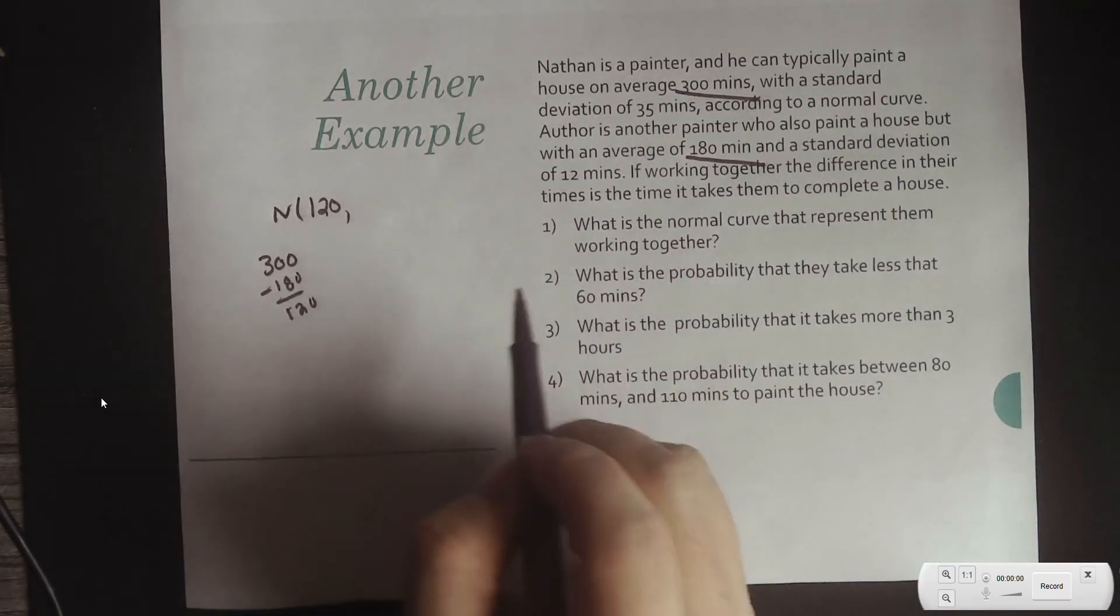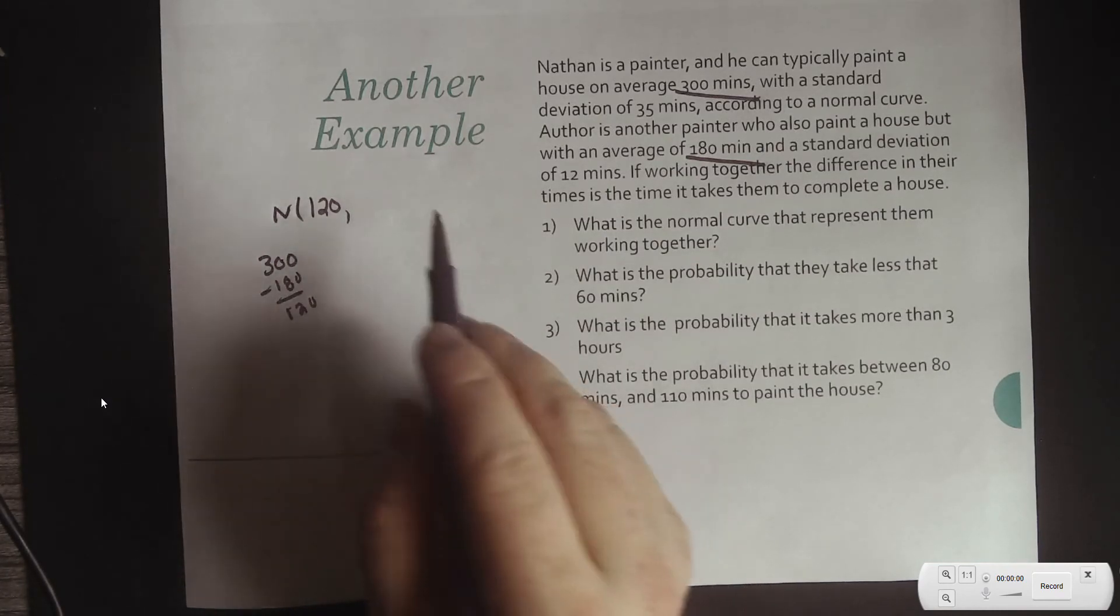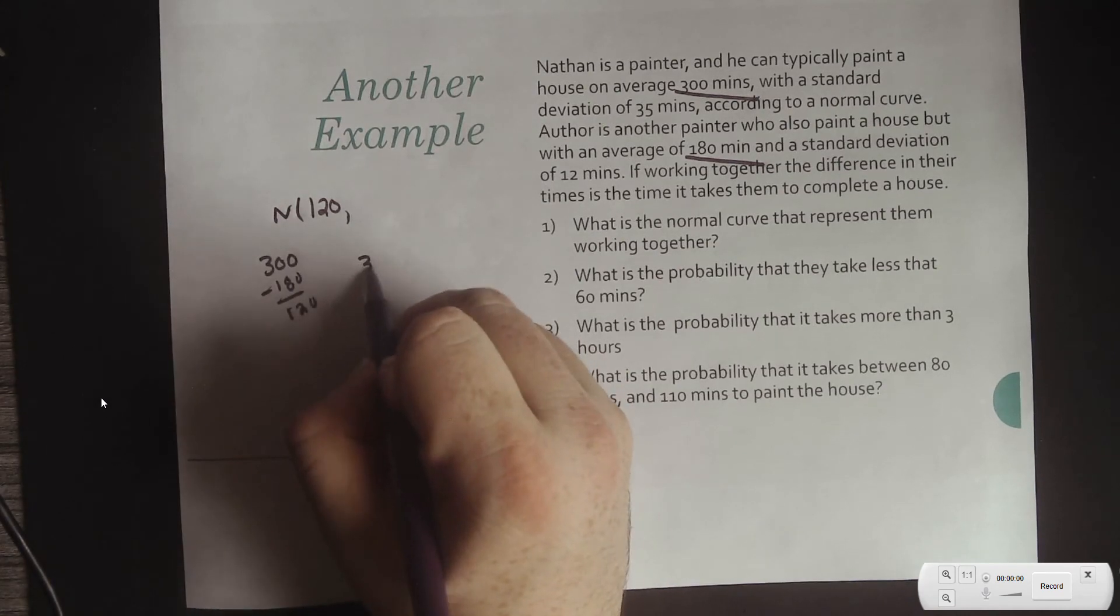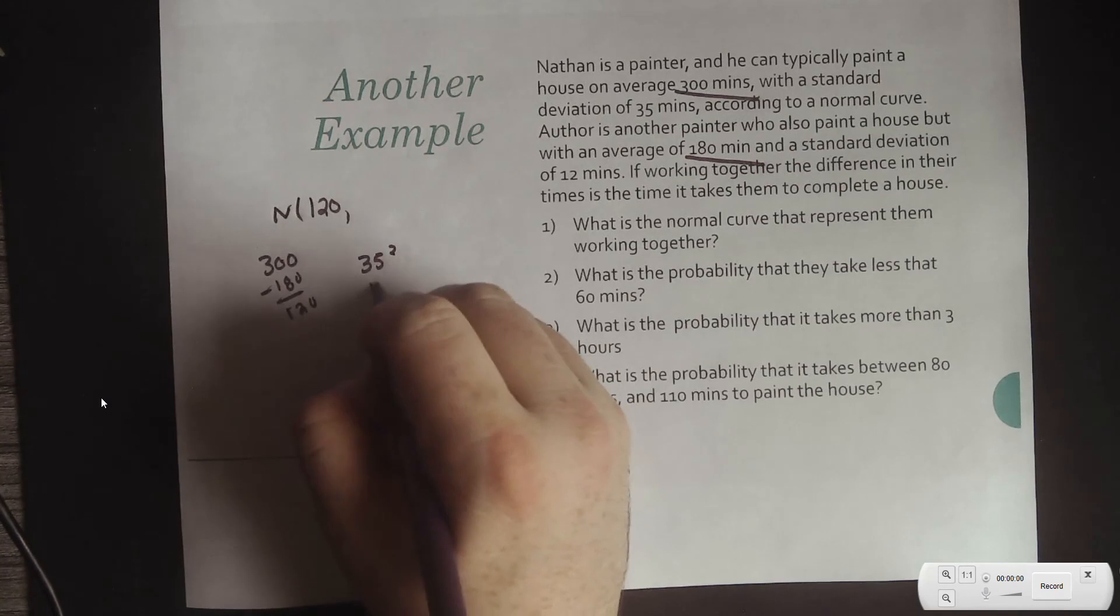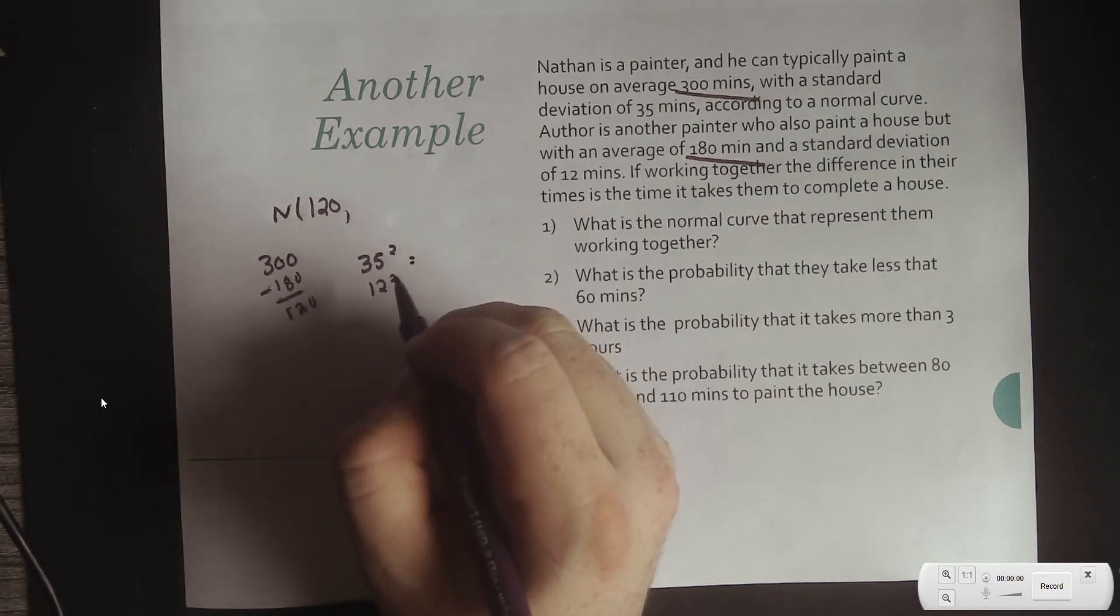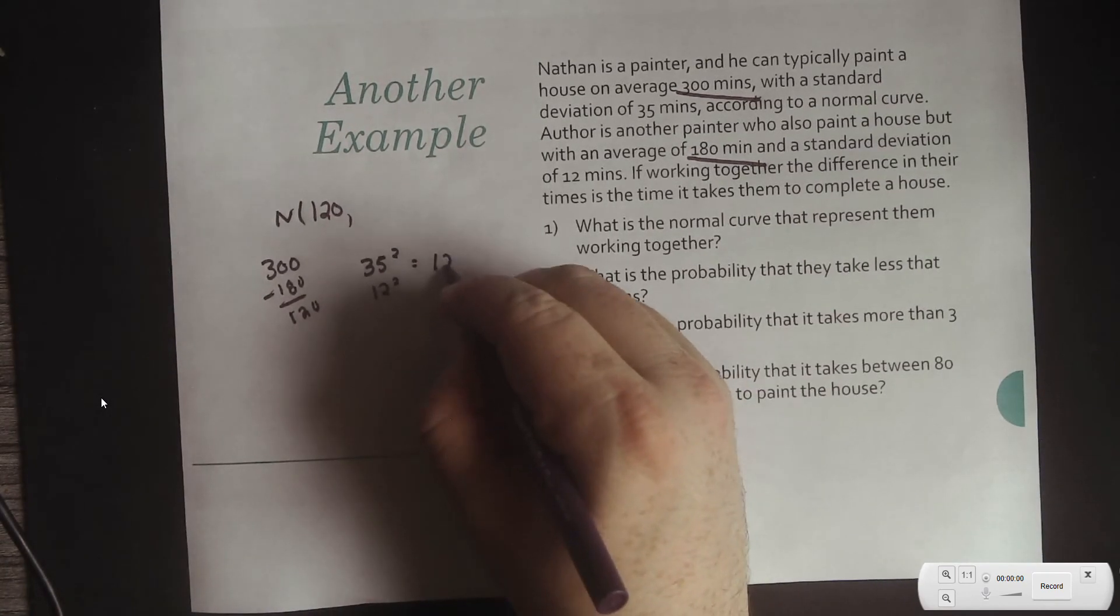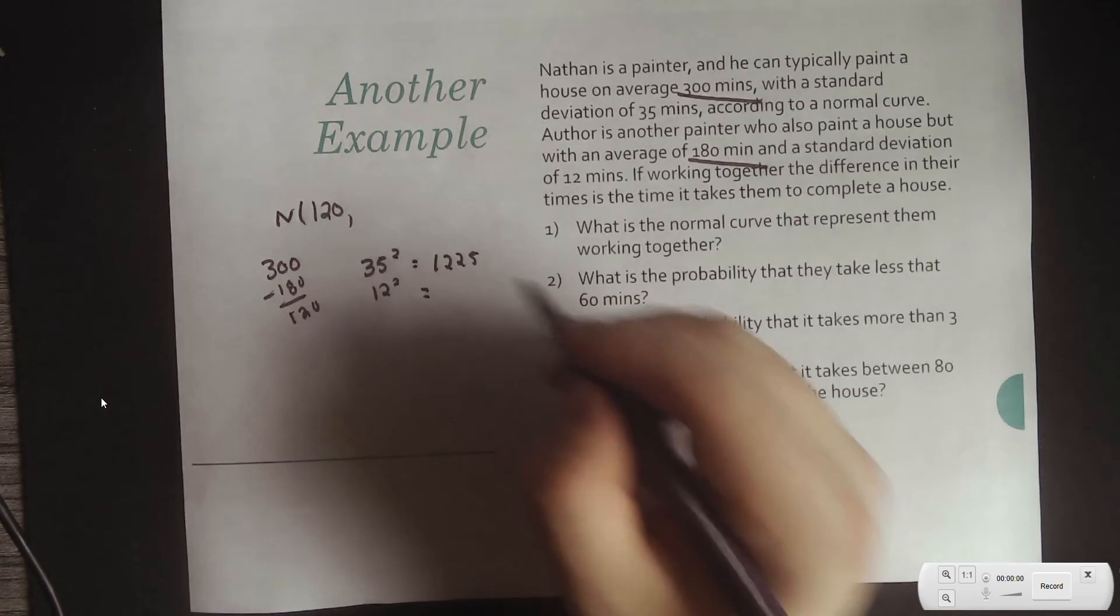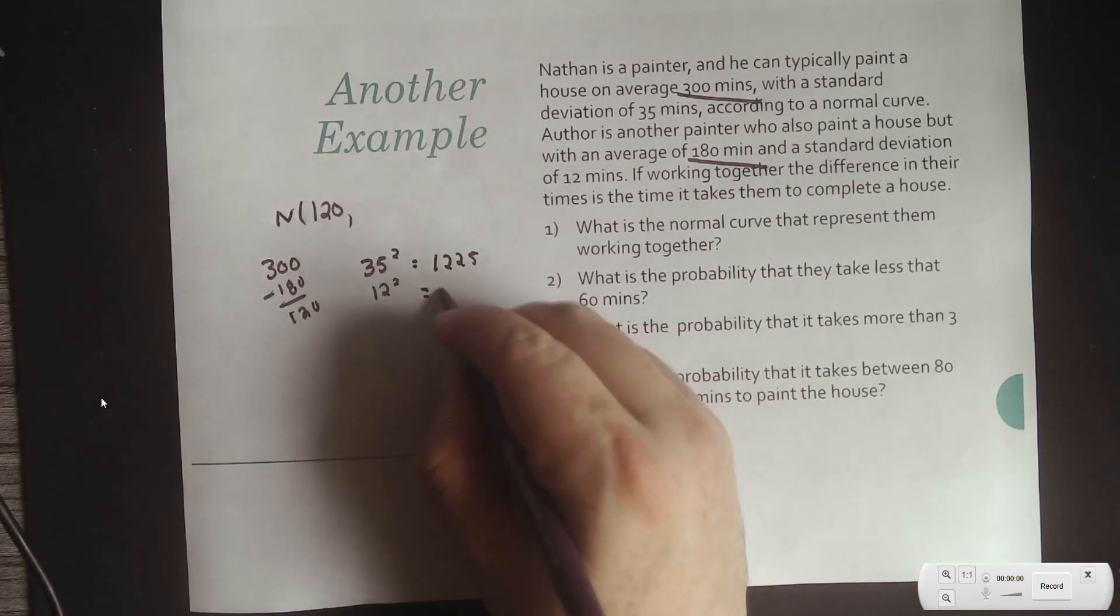And again, you can't define the new standard deviation. You can't base it off of standard deviations. You have to base it off of variances. So, you're going to do 35 squared and you're going to do 12 squared. So, 35 squared is 1225 and 12 squared is 144.